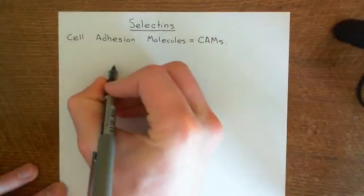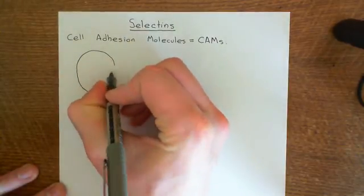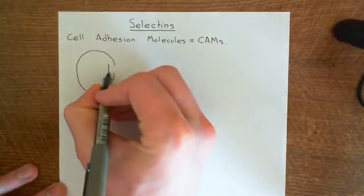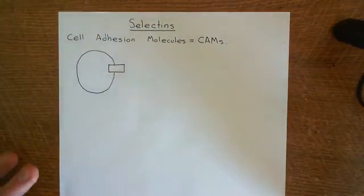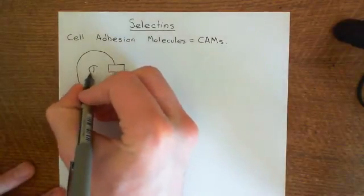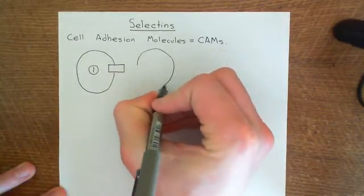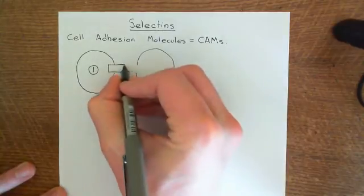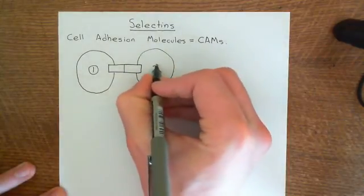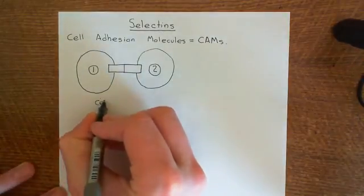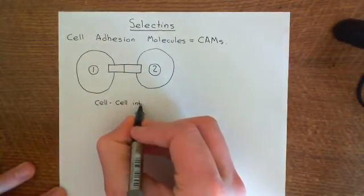Let me show you very crudely the cell adhesion molecules. Here is a cell — this line represents the cell membrane — and inserted into the cell membrane it can have a cell adhesion molecule. Let's say this rectangle represents a cell adhesion molecule, and let's call this cell one. We can have another cell here with another cell adhesion molecule inserted into its membrane, cell two. This is a cell-cell interaction, where the two cells are held together by their cell adhesion molecules being attached to one another.